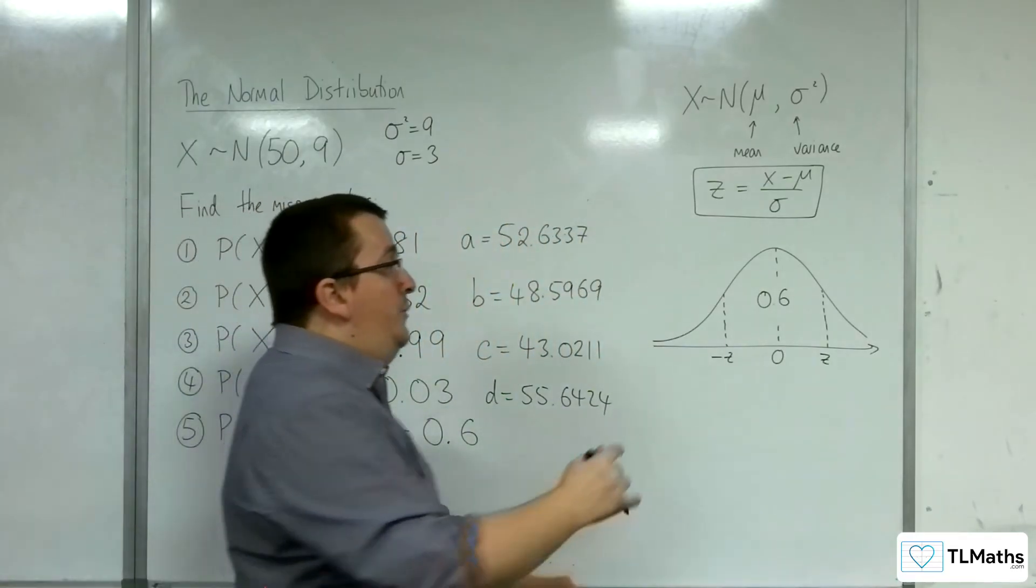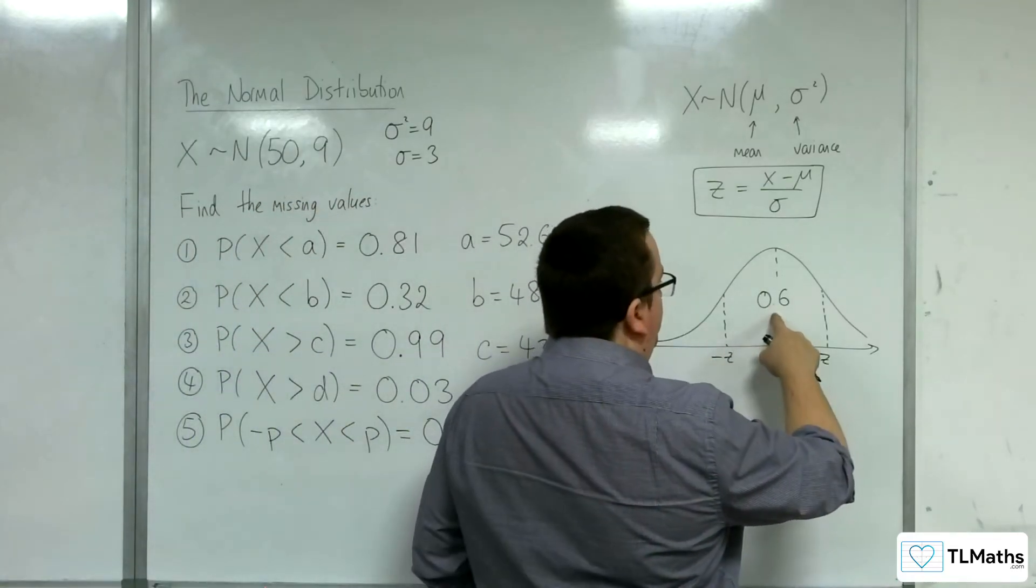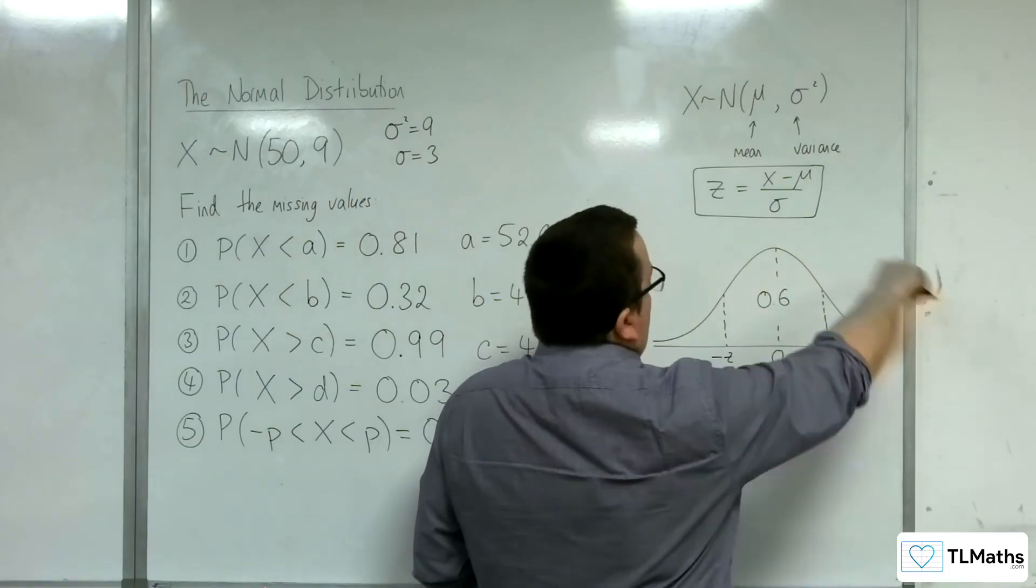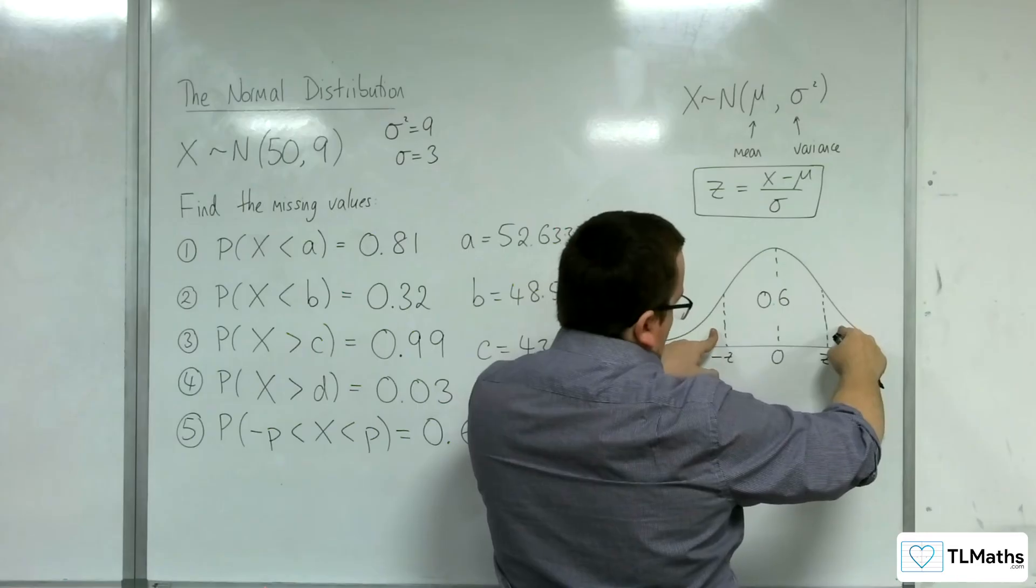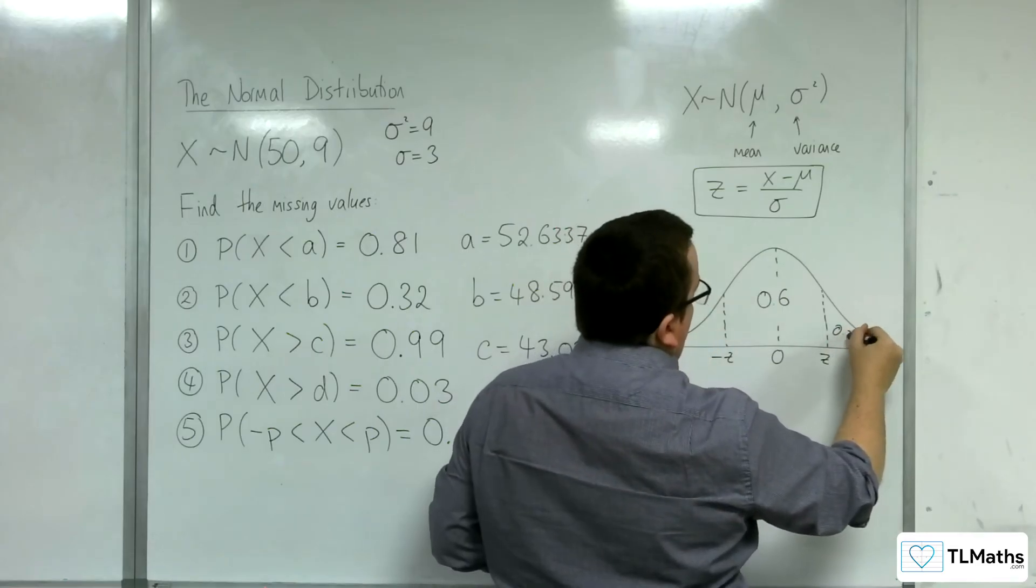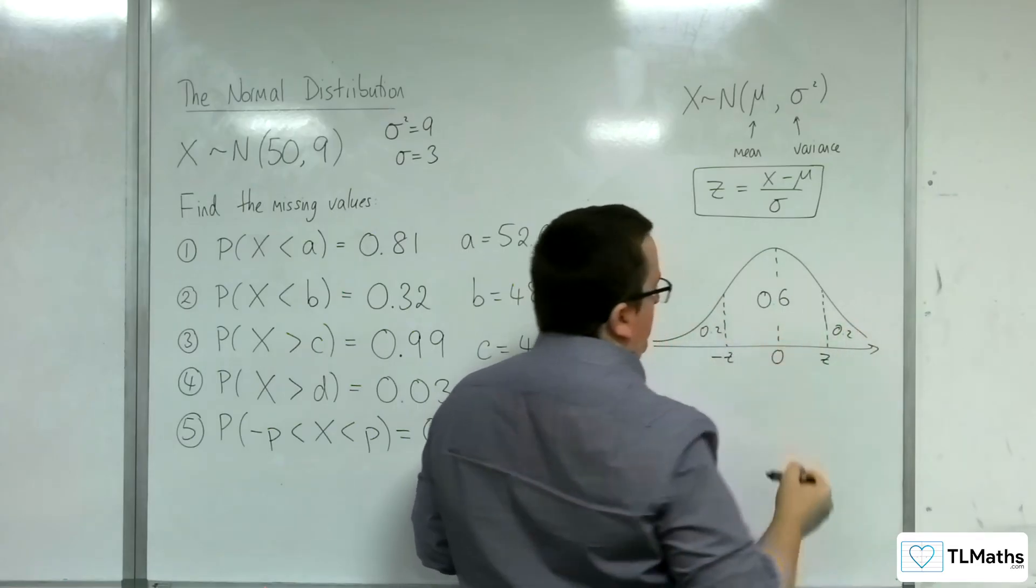Now, if that is 0.6, then, and all of it adds up to 1, these two must add up to 0.4. And because they're equal, that's got to be 0.2, and that's got to be 0.2.